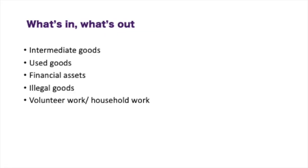What's included and what's not included in GDP? Intermediate goods — we've already touched on those; they're all the goods that go into making the final good. Used goods — anything you buy from Savers or Goodwill would not be included. Financial assets — any money gained on the stock market or interest from a savings account would not be included, because you're not making a product with that. Illegal goods are not going to be included. Volunteer work and household work are also not counted. For example, if you own a lawn mowing business and mow your own lawn, that would not count towards GDP. However, if you go door to door and charge $10 to mow other people's lawns, then that would be counted towards GDP.